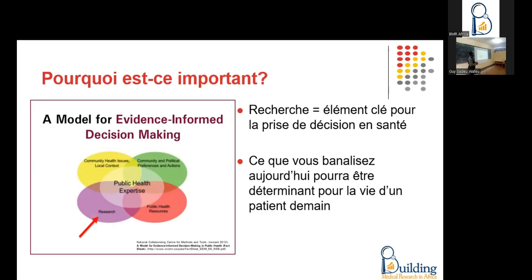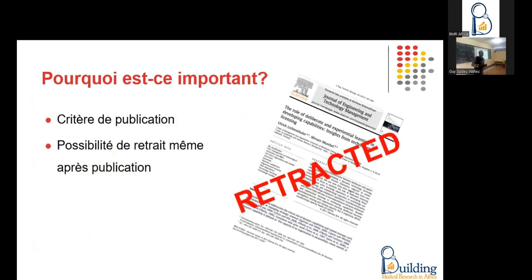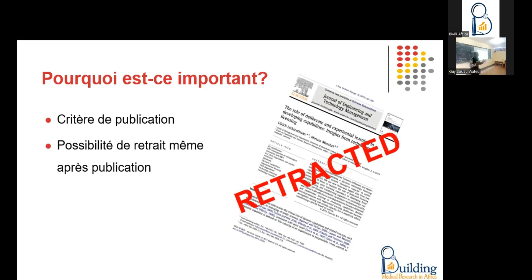For a work to be published, it must be of good quality, especially when it is a serious journal. The quality of a work is a criteria for publication. I think that is one of the reasons why most things are not published — because the quality is not good. It is important to know that we can even retract an article after publication if we realize that in the method used there is a problem. In the case of Covid, several articles were published but then we realized that the quality of the work was doubtful, and some articles were removed.